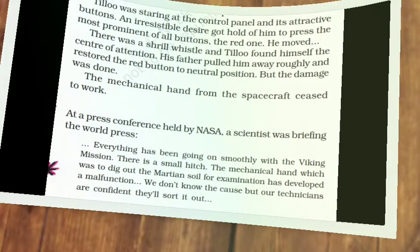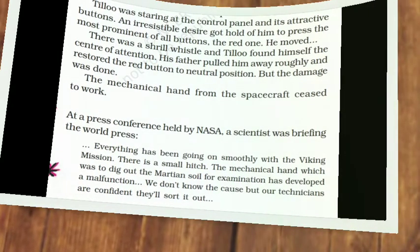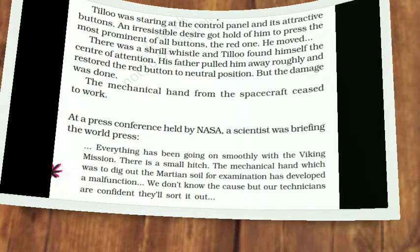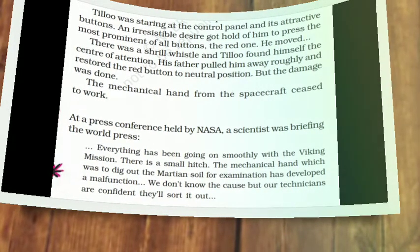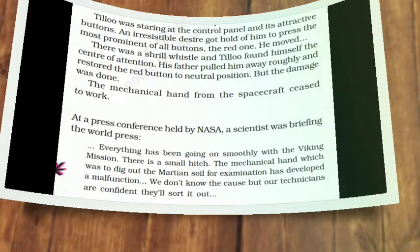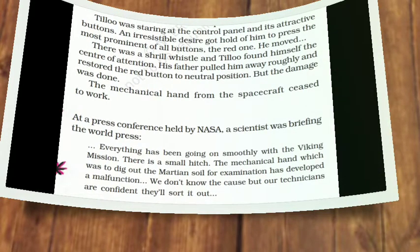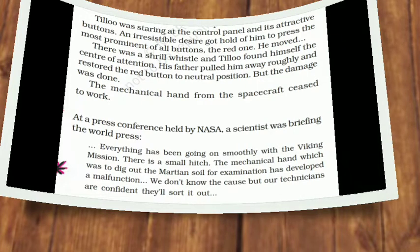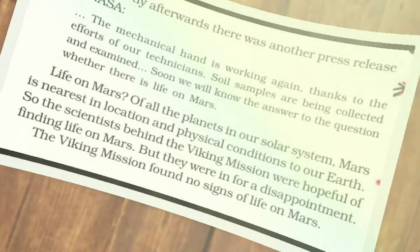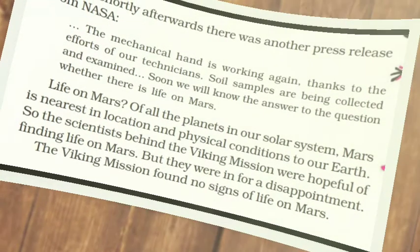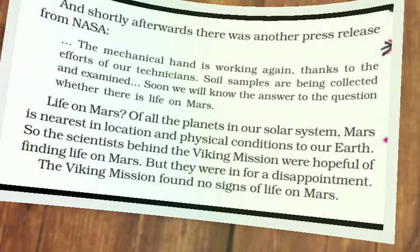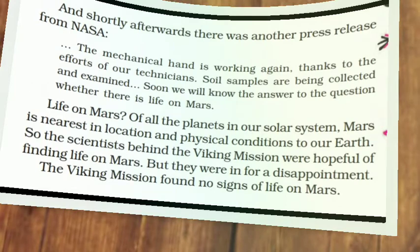Where had the spacecraft come from? The spacecraft had come from the Earth. Meanwhile, a NASA scientist was holding a press conference. He informed that their Viking mission to Mars was going on smoothly, but they had to face a small problem — a mechanical hand that was to collect the soil samples had stopped working. Another announcement said that the hand was working again, but the soil samples it collected could not prove that there was life on Mars. NASA scientists were disappointed. There was no sign of life on Mars.